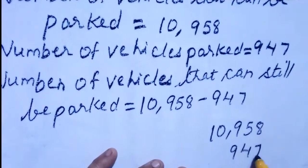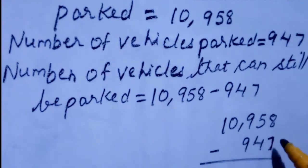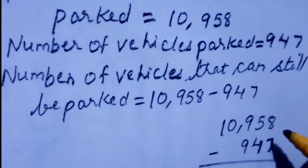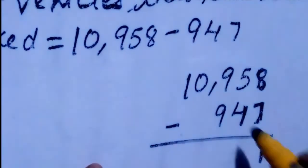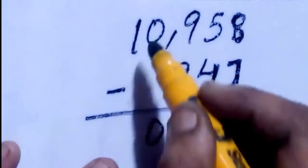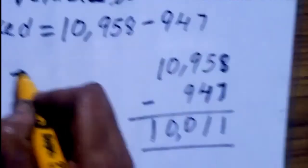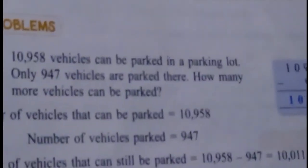Let us do this subtraction: 10,958 minus 947. Starting from the right: 8 minus 7 is 1. 5 minus 4 is 1. 9 minus 9 is 0. 0 minus 0 is 0. 1 minus 0 is 1. So the answer is 10,011 vehicles can still be parked.